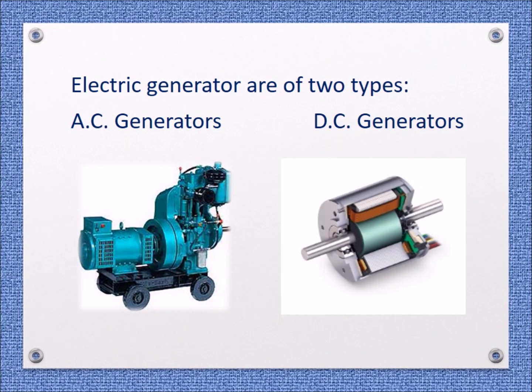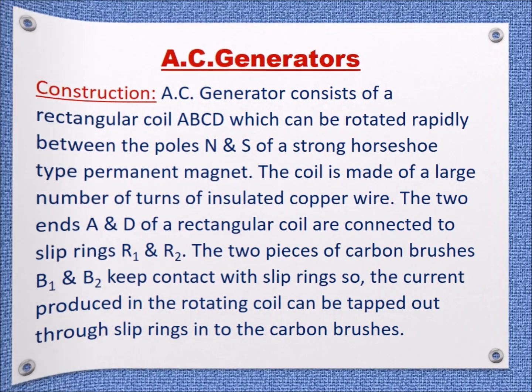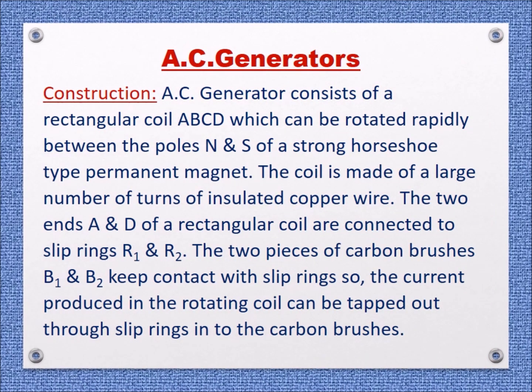Electric generators are of two types: AC Generators and DC Generators. An AC Generator consists of a rectangular coil ABCD which can be rotated rapidly between the poles N and S of a strong horseshoe-type permanent magnet. The coil is made of a large number of turns of insulated copper wire.